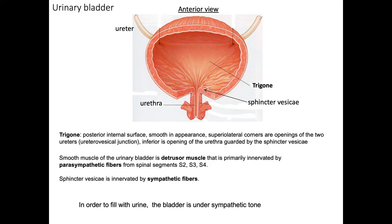Looking inside the bladder, we have the smooth surface named the trigone, and the rest of the bladder is made up of detrusor muscle. The bladder is parasympathetically innervated, which allows it to contract and expel urine. The sphincter vesicae muscle is the smooth muscle portion at the neck of the bladder, innervated by sympathetic fibers. To fill with urine, the sphincter vesicae must be contracted under sympathetic tone, but to expel urine you need parasympathetic tone. The process of potty training young children is essentially teaching them to control these autonomic functions.